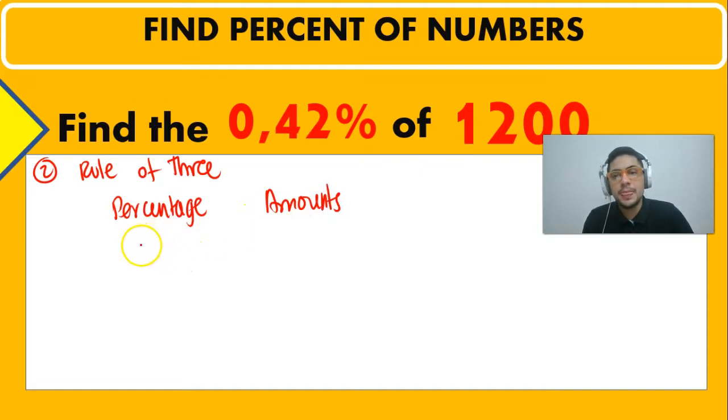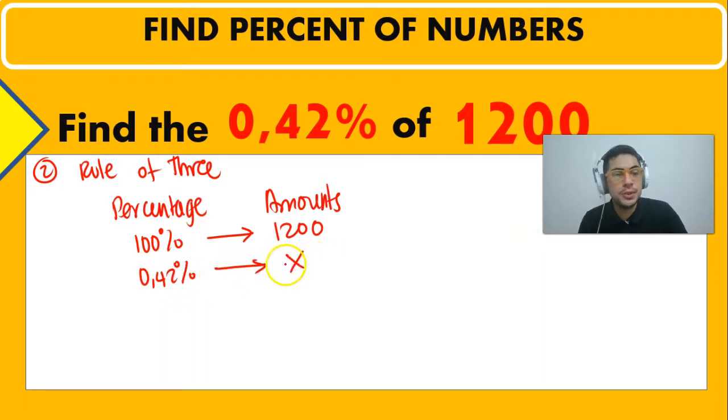So we know that the 100% is going to be the whole number, 1,200. But we're being asked, what is the 0.42%? And we don't actually know that. We're going to find that out.